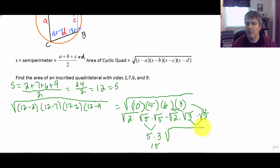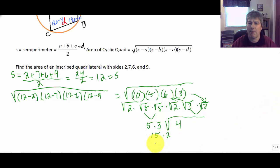And now we still have some things left under the square root. I have the square root of 4 left over. So 5 times 3 times the square root of 4 is 2. So we have 15 times 2 is 30. So our area of our inscribed quadrilateral must be 30 units squared.